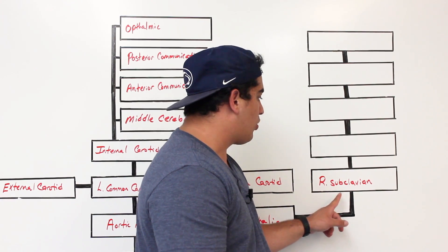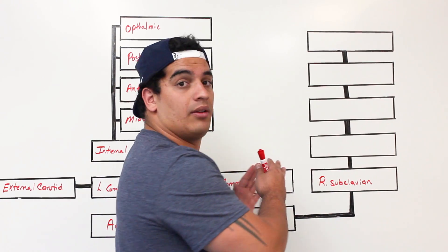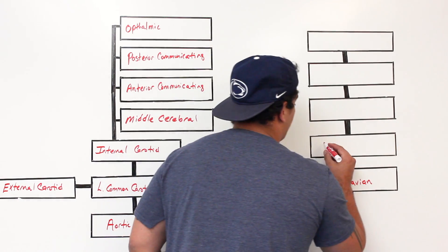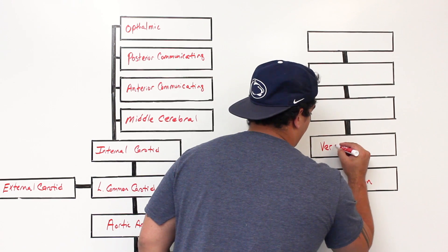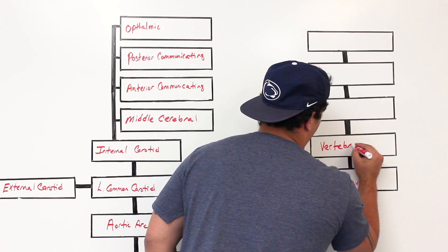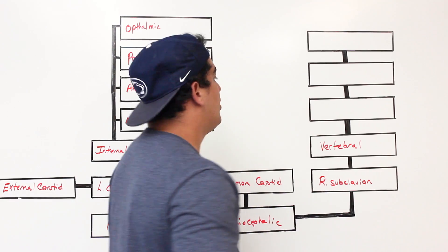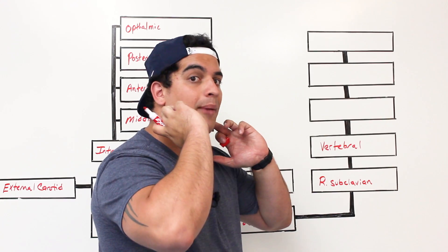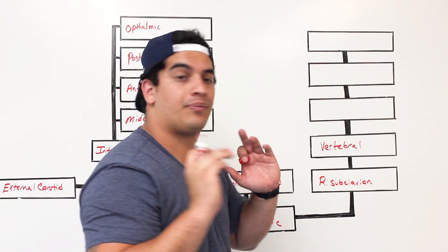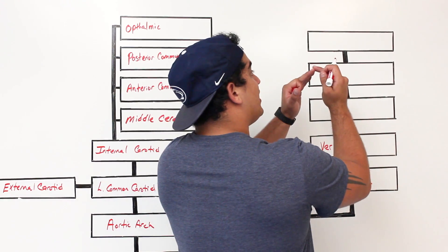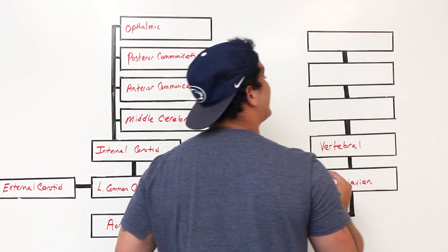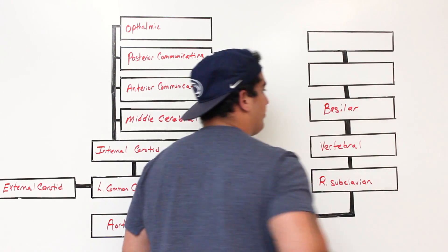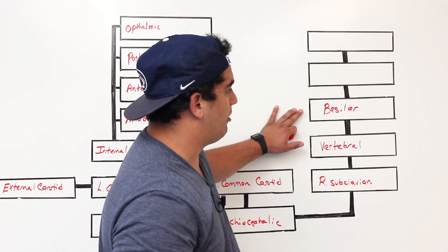Now let's look at the right and left subclavian arteries. Both the right subclavian and the left subclavian — which comes off the aortic arch — give off vertebral artery branches. These vertebral arteries travel through the transverse foramina of the cervical vertebrae. As they move up, they come together and form what's called the basilar artery.